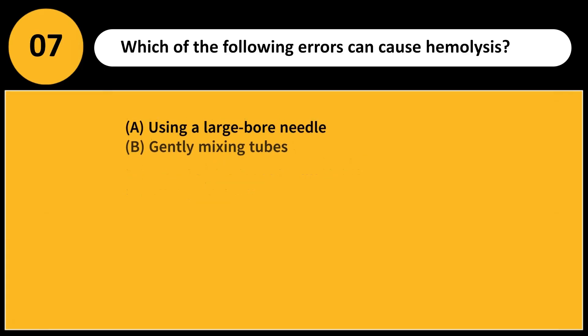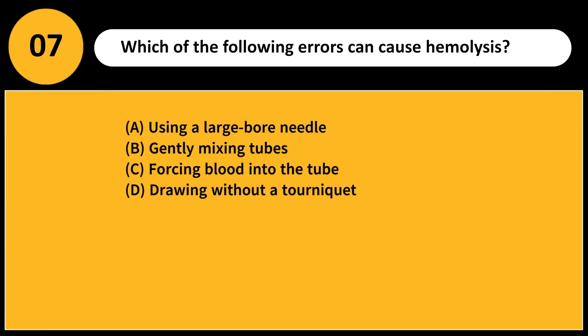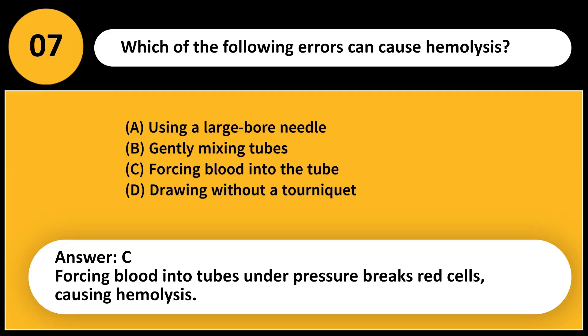Which of the following errors can cause hemolysis? A. Using a large-bore needle. B. Gently mixing tubes. C. Forcing blood into the tube. D. Drawing without a tourniquet. Answer: C. Forcing blood into tubes under pressure breaks red cells, causing hemolysis.